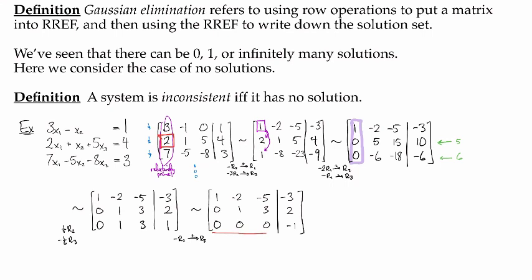Now, the moment that you see something that looks like this, you know that there's going to be no solution. And why is that? Let's look at the equation that this corresponds to. This corresponds to 0x₁ + 0x₂ + 0x₃ = -1. And that says 0 = -1, and that's definitely a contradiction. So we know that this one is inconsistent.